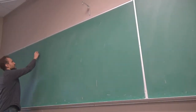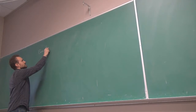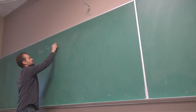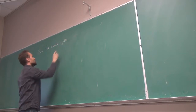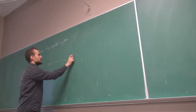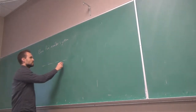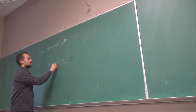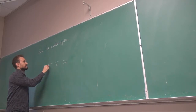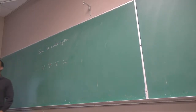In base 5, we count places according to how many the quantity needs. We're counting ones, then fives, then 5 squared, then 5 cubed, and so on as we need them depending on the quantity.